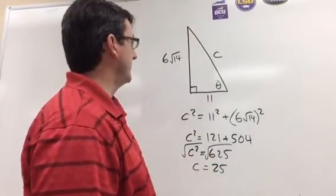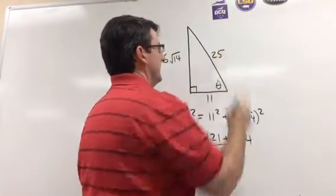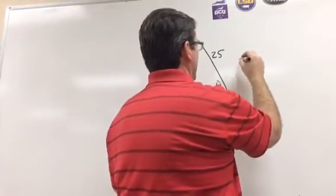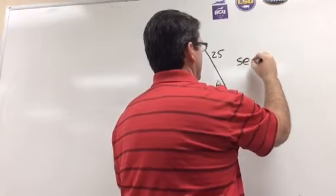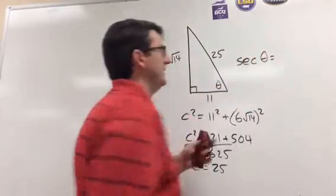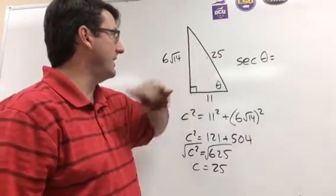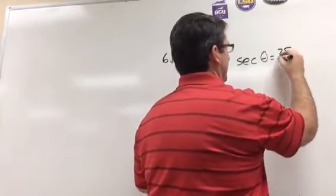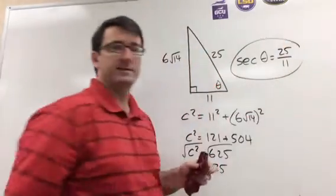So let's go ahead and put our 25 there, and then we can find the secant. The secant of theta is going to be equal to the length of the hypotenuse divided by the length of the adjacent side, so 25 over 11. And that's our answer.